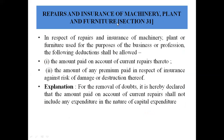Section 31 covers repair and insurance of machinery, plant and furniture. In respect of repairs and insurance of machinery, plant and furniture used for the purpose of business or profession, the following deductions shall be allowed: the amount paid on account of current repairs and the amount of any premium paid in respect of insurance against risk of damage or destruction. For removal of doubt, current repairs shall not include any expenditure in the nature of capital expenditure.